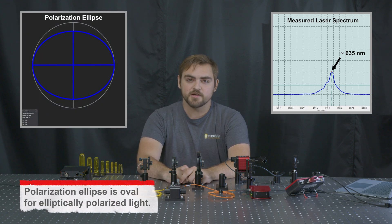One could assume that 635 nanometers is close enough to 633 that we wouldn't see a significant difference in performance. However, if we take a look at the polarization state as measured by the polarimeter here, we can see just how elliptical it is.